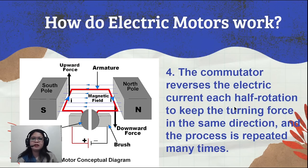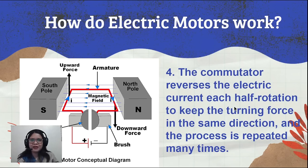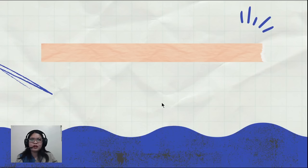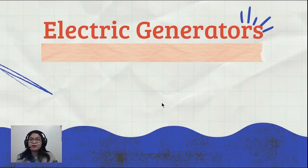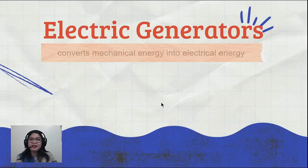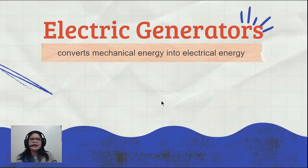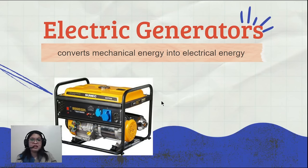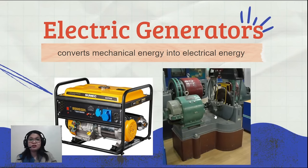Electric motors are applications of electromagnetism because electricity is the input and magnetism is a result of electricity. Our next application is the reverse of an electric motor — it is an electric generator. If an electric motor converts electrical energy into mechanical energy, an electric generator converts mechanical energy into electrical energy. There are many different kinds of generators, such as those that use gasoline and heavy-duty generators.